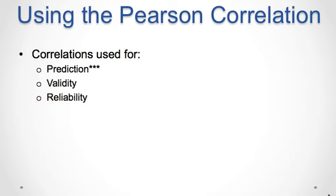The main use for correlations is to make predictions. If two variables have a strong linear relationship, then we can use one variable to make predictions about the other. Other uses for correlations are to demonstrate the validity and reliability of a new test for measuring a phenomenon.